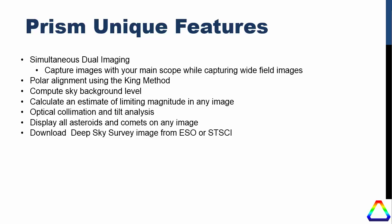There's also a function for optical collimation and tilt analysis. It takes a series of exposures as it moves the focuser along and analyzes how closely the CCD and focuser are aligned to the optical axis of the telescope. Another very handy feature is the ability to display all asteroids and comets on any image — so you can take one of your older images, run it through the system, and determine that you actually captured some fairly faint asteroids.